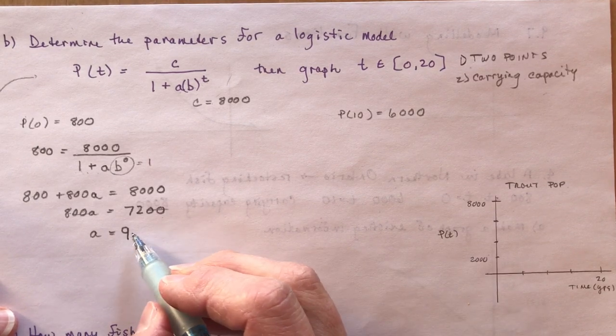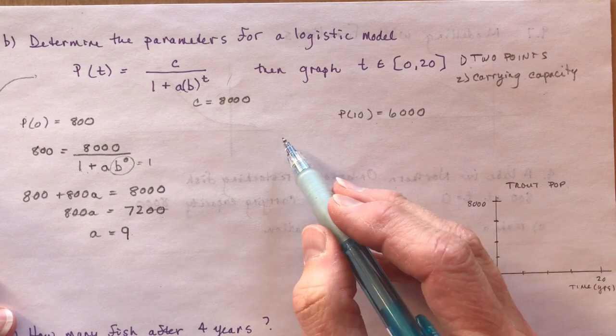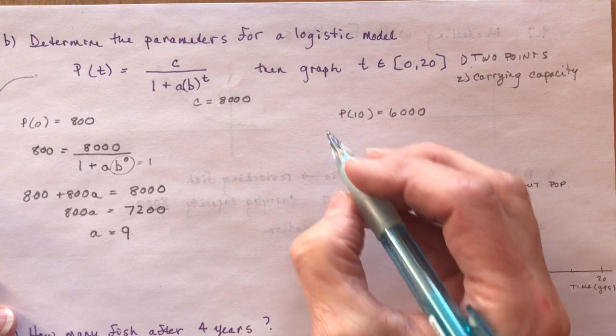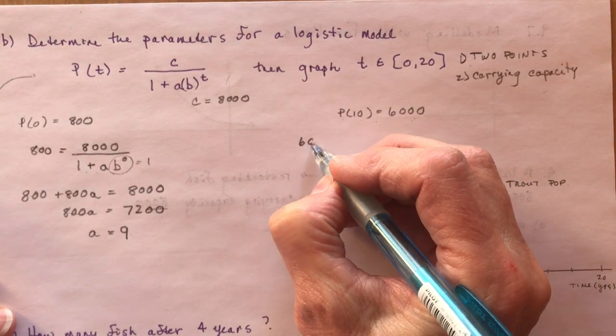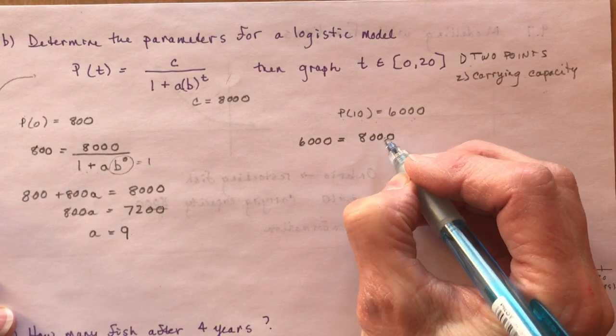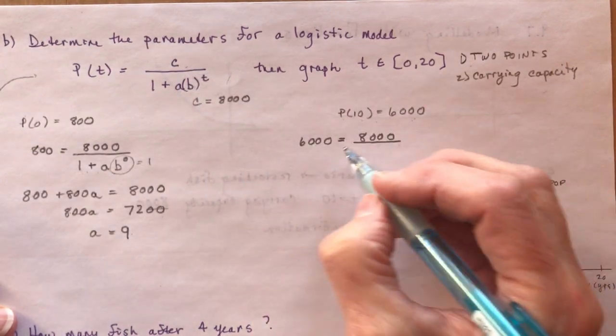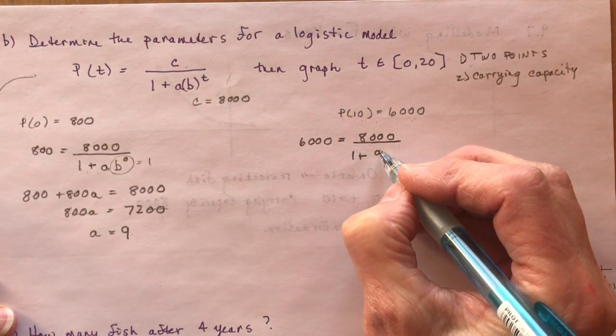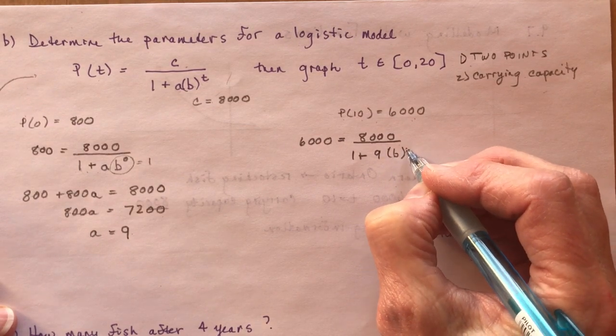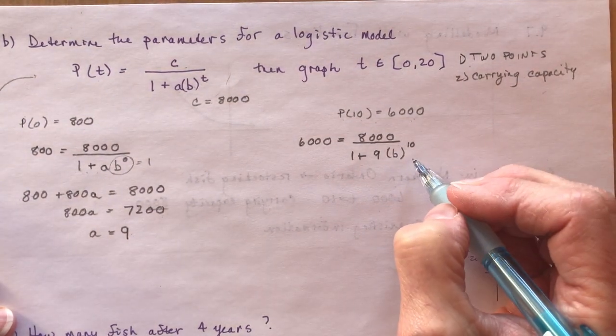So now that I have what A is, I can use this second point here, plug it all in, and solve for B. So population after 10 years was 6,000. So I'm going to let 6,000 equal the carrying capacity. So I'm setting up my equation. I've got 8,000 up here, carrying capacity, divided by 1 plus A, now is 9, times B to the power of 10.